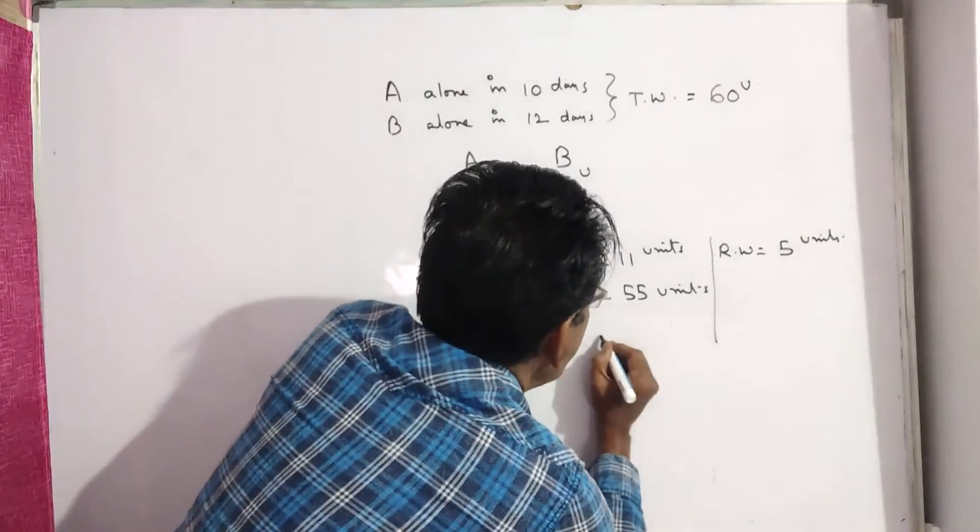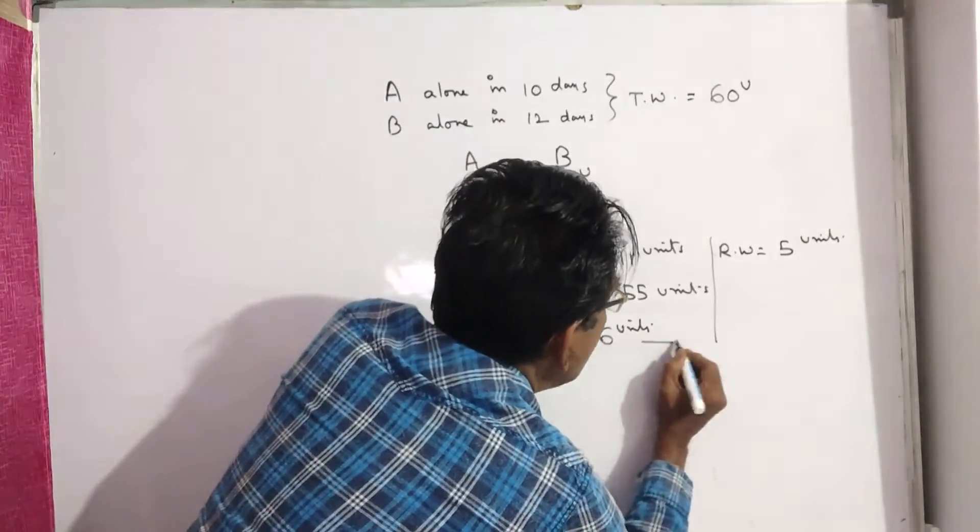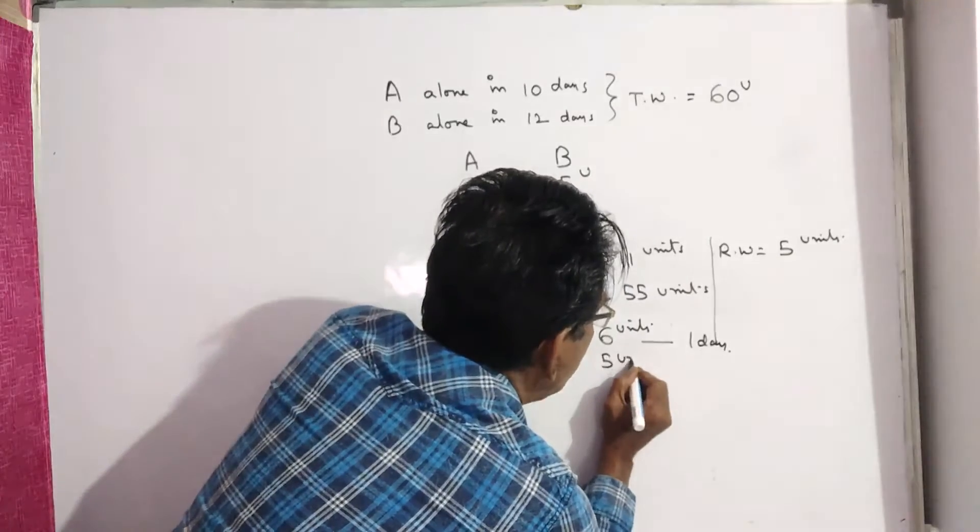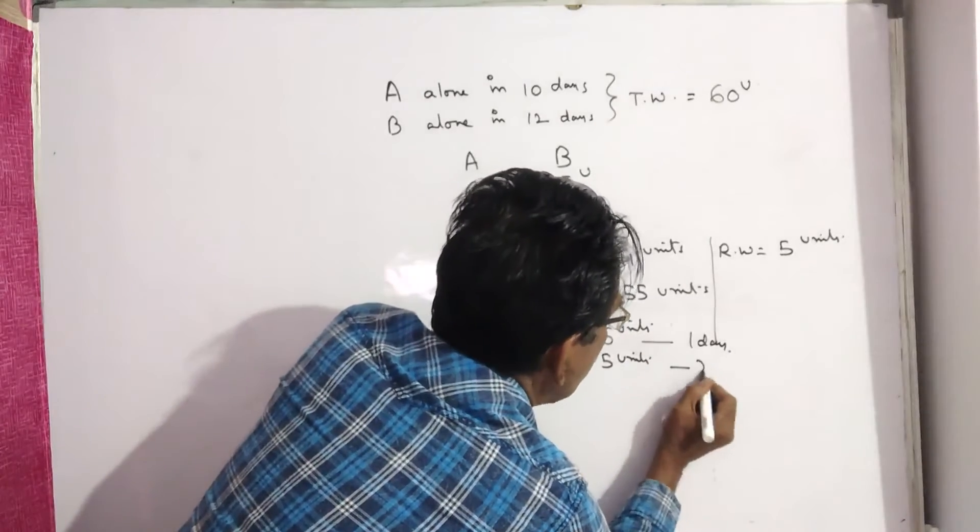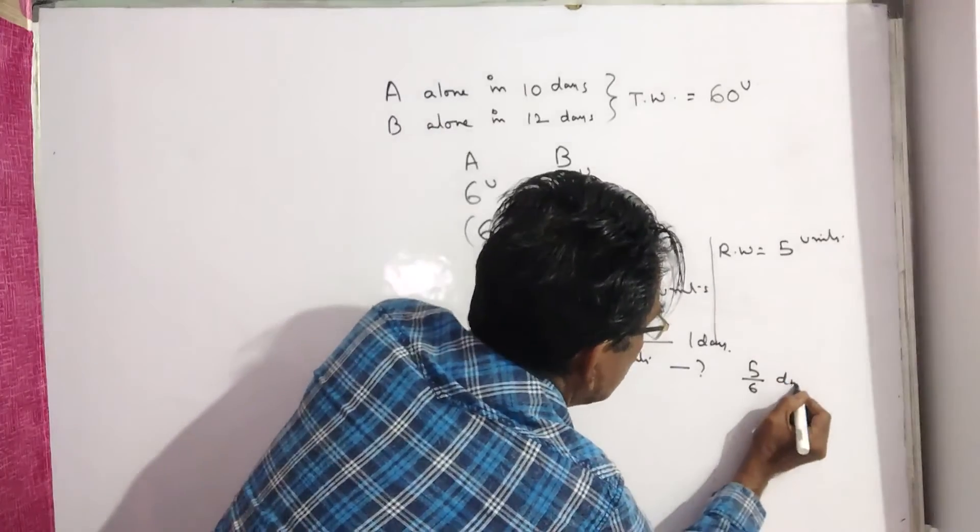A's capacity is 6 units in one day. Since only 5 units of work is remaining, this 5 units can be done by A in 5 by 6 day.